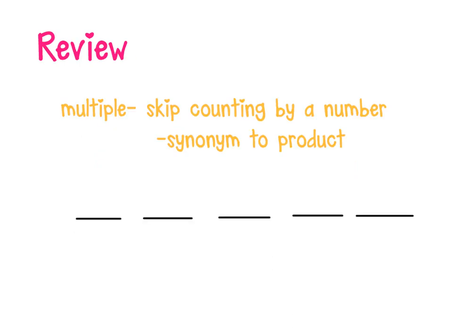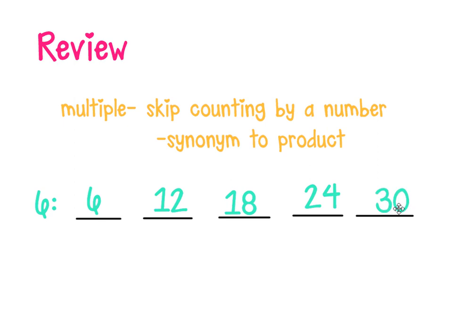Let's also review what multiples are. Multiples are when we skip count by a number — it's another way to say our product. So multiples of six: the first multiple is six, the second is twelve, the third is eighteen, the fourth is twenty-four, and the fifth is thirty.